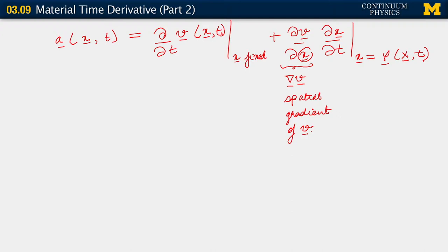But then what is partial of little x with respect to time, knowing that little x is just phi? So this term here is just partial of phi with respect to time. But what is partial of phi with respect to time? Phi is the motion after all, so its derivative with respect to time is simply the velocity. And we are going to write it as v of x comma time.